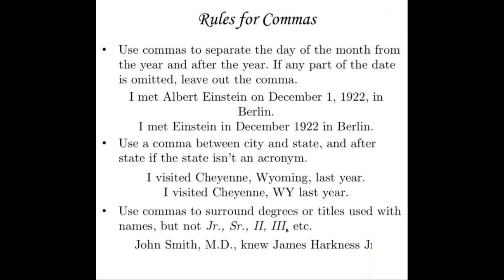Use commas to separate the day of the month from the year, and after the year if you go on with the sentence. If any part of the date is omitted, leave out the comma. For example: "I met Albert Einstein on December 1, 1922, in Berlin" — we have the complete date, so we use the comma after 1922. But "I met Einstein in December 1922 in Berlin" — no commas whatsoever, because we've left out the day.